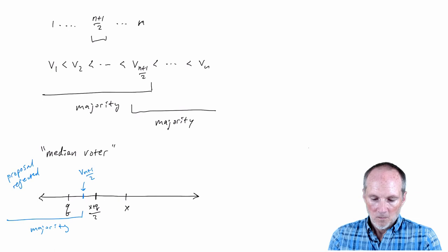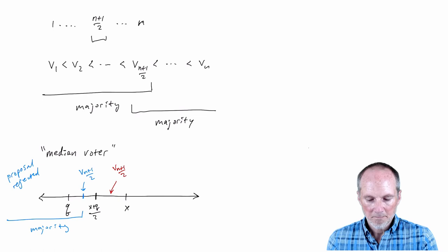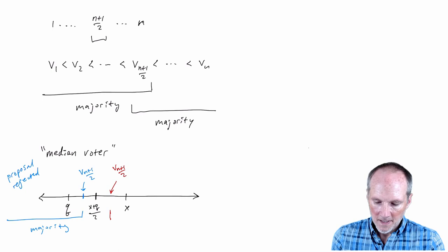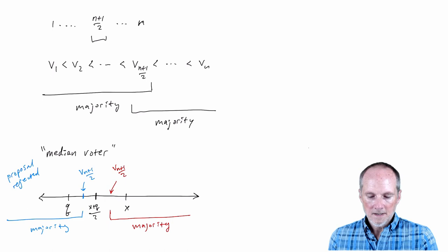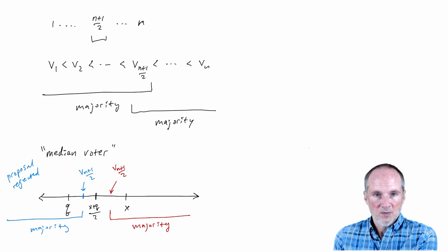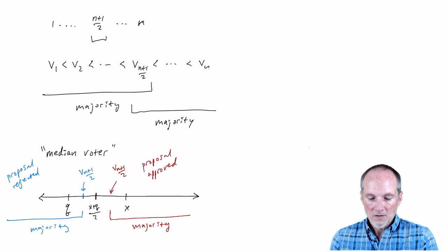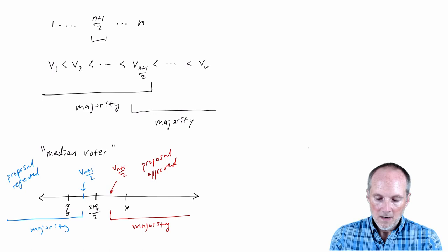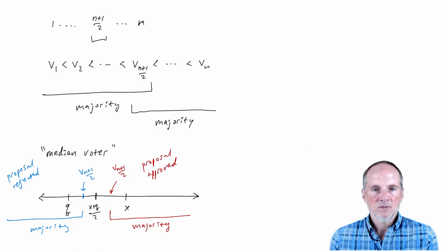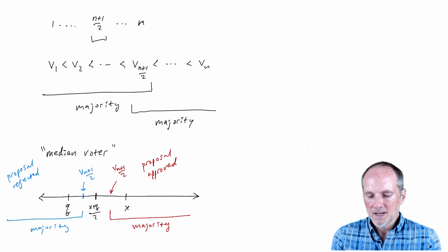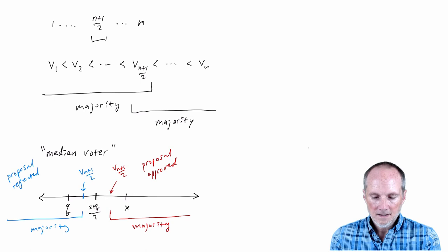What if the median voter is to the right of that midpoint? The median voter plus everyone to the right is a majority, so there's a majority of voters to the right of the midpoint — they all vote for the proposed policy, and the proposal is approved. If the median voter is exactly at the midpoint, they're indifferent, and by our assumption they approve, so the proposal is approved as well.